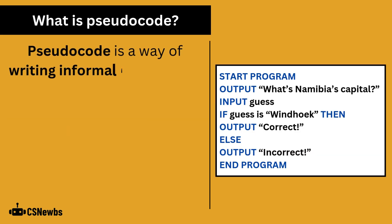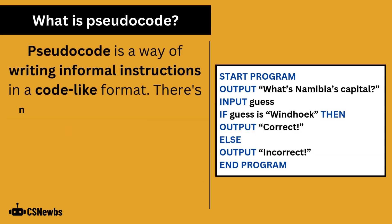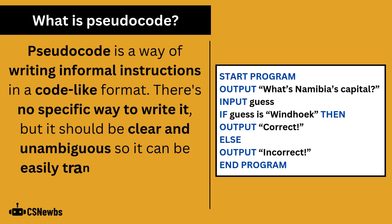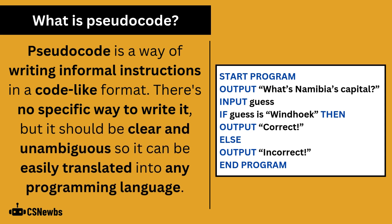Pseudocode is a way of writing informal instructions in a code-like format. There's no specific way to write it, but it should be clear and unambiguous so it can be easily translated into any programming language.